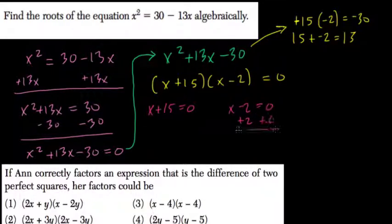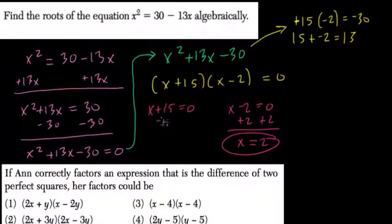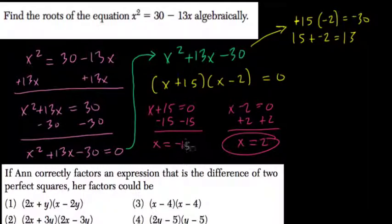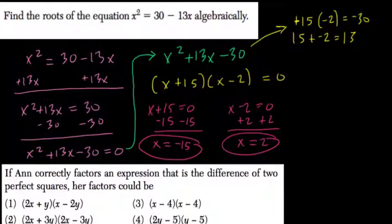Solve for x. Add 2 to both sides here. x equals 2. That's our first root. Subtract 15 from both sides. So, x is negative 15, and that's our second root. So, let's see. You can see this.